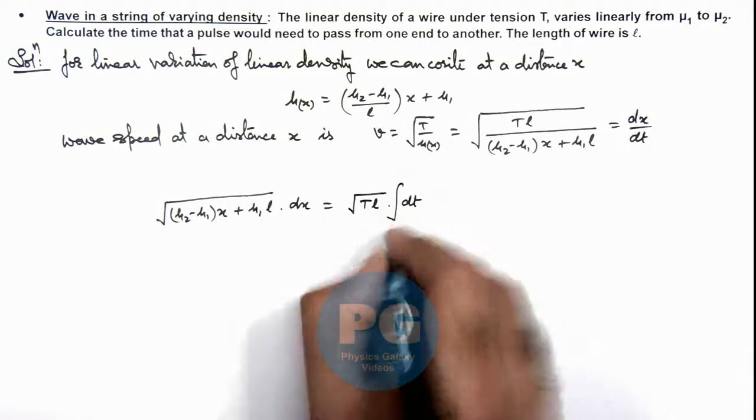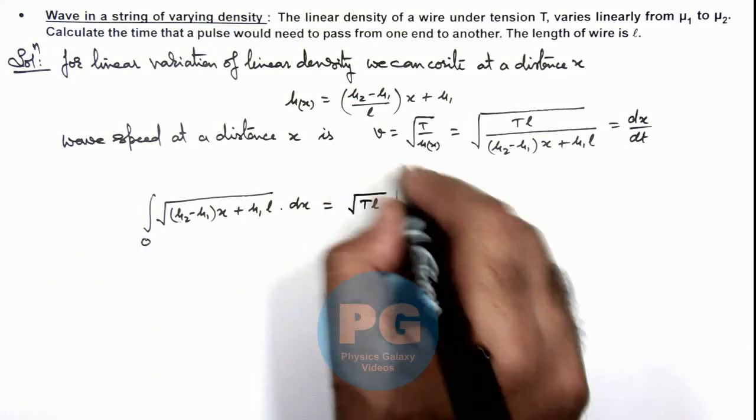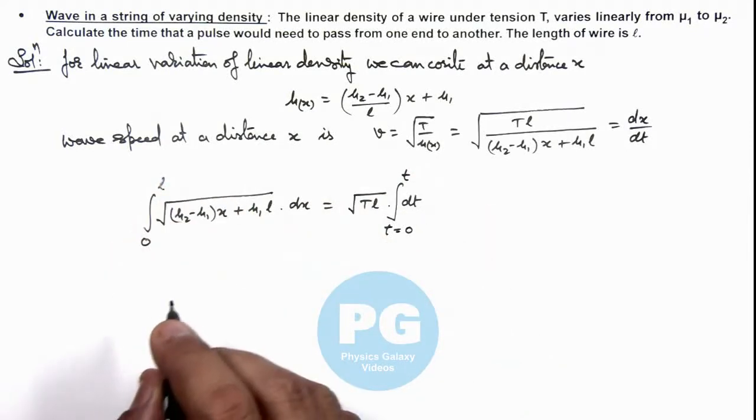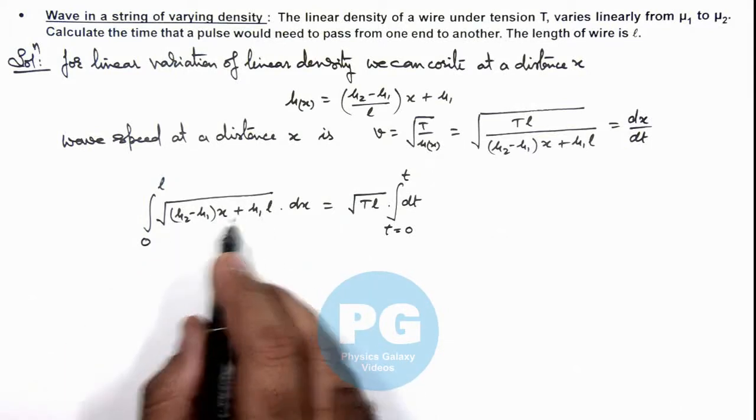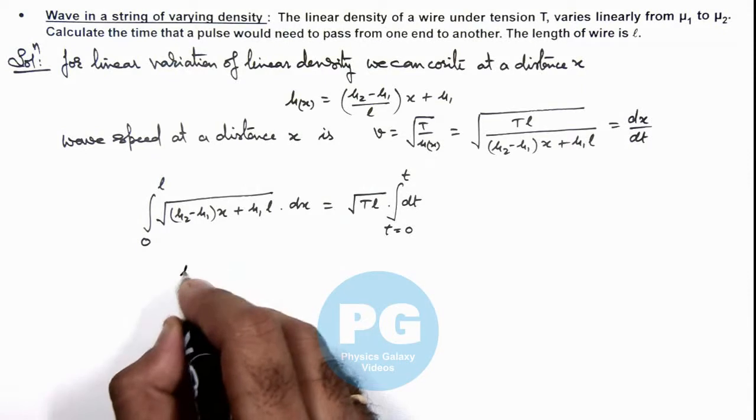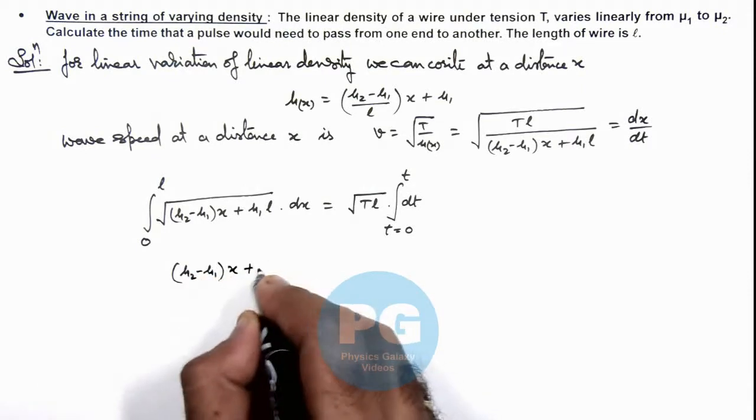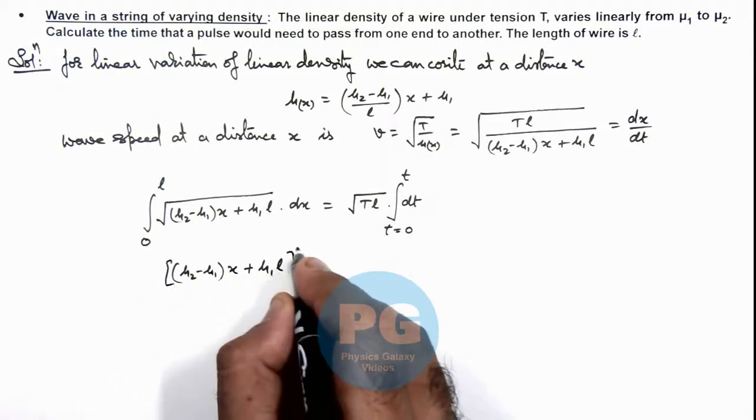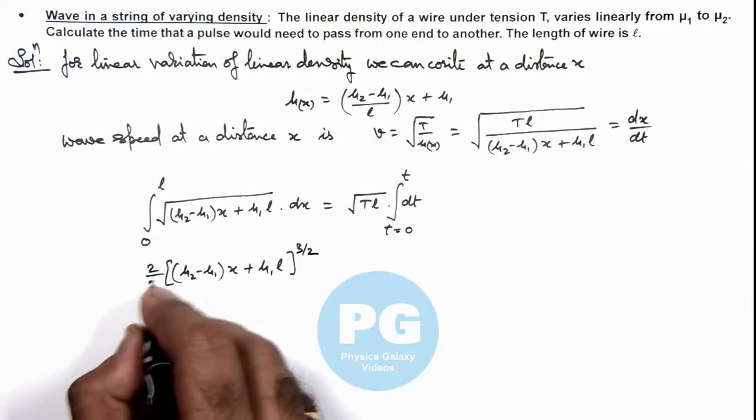If we integrate these terms, at t = 0, x was 0, and at time t, the pulse traveled to a distance L. Then, in this situation, if we integrate this term, this is a simple integration which can be given as (2/3) × [(μ2 - μ1)x + μ1L]^(3/2) / (μ2 - μ1).